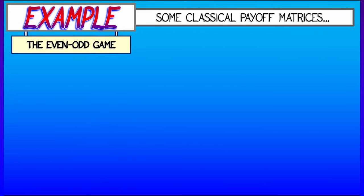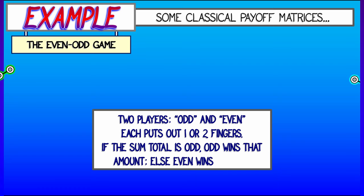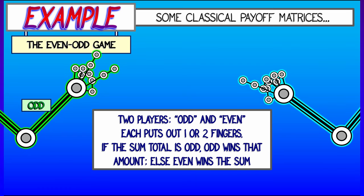Here's another really interesting example, something called the even-odd game. You have two players, player-odd and player-even, and each one puts out either one or two fingers. You add those numbers together.